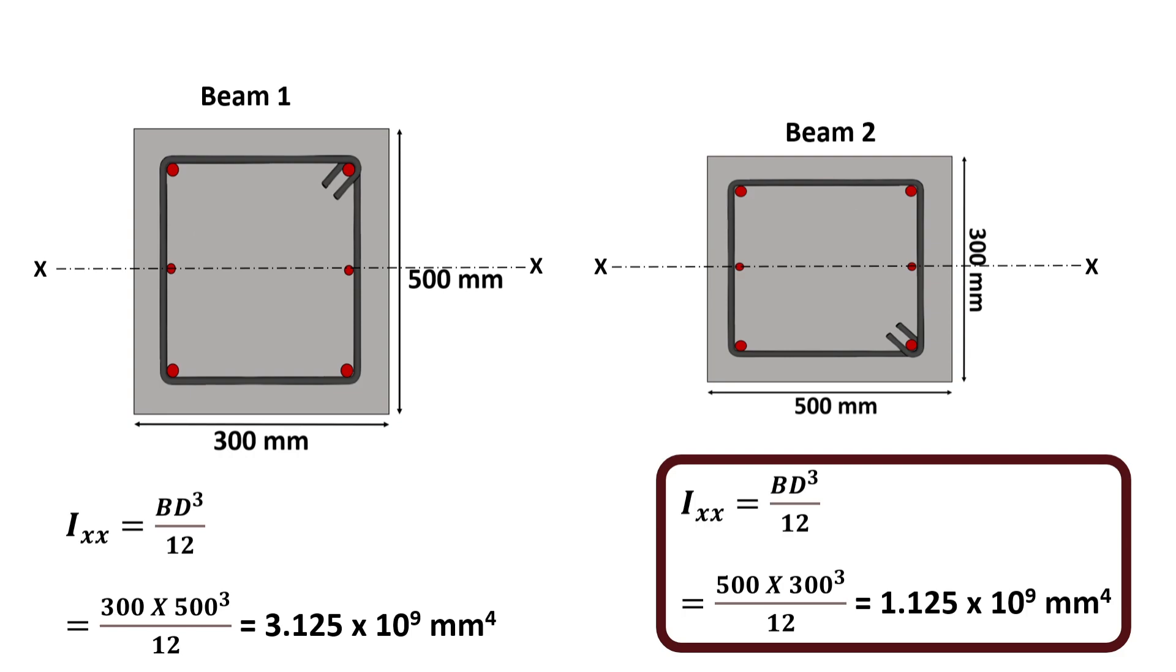Based on this calculation, it can be concluded that beam 1 has a larger moment of inertia than beam 2 despite both having the same cross sectional area. So it's more economical to design a beam with a greater depth in comparison to its width.